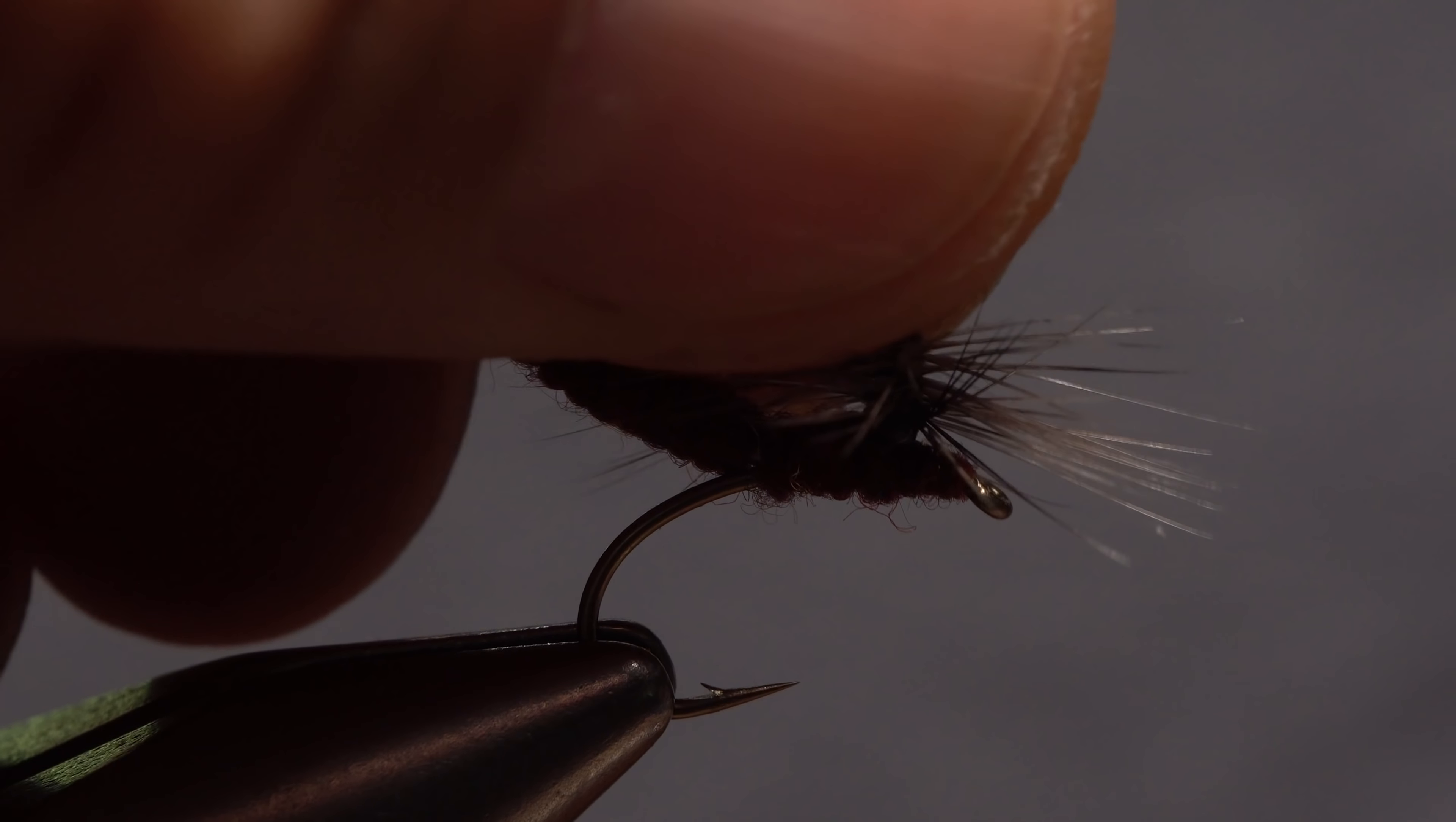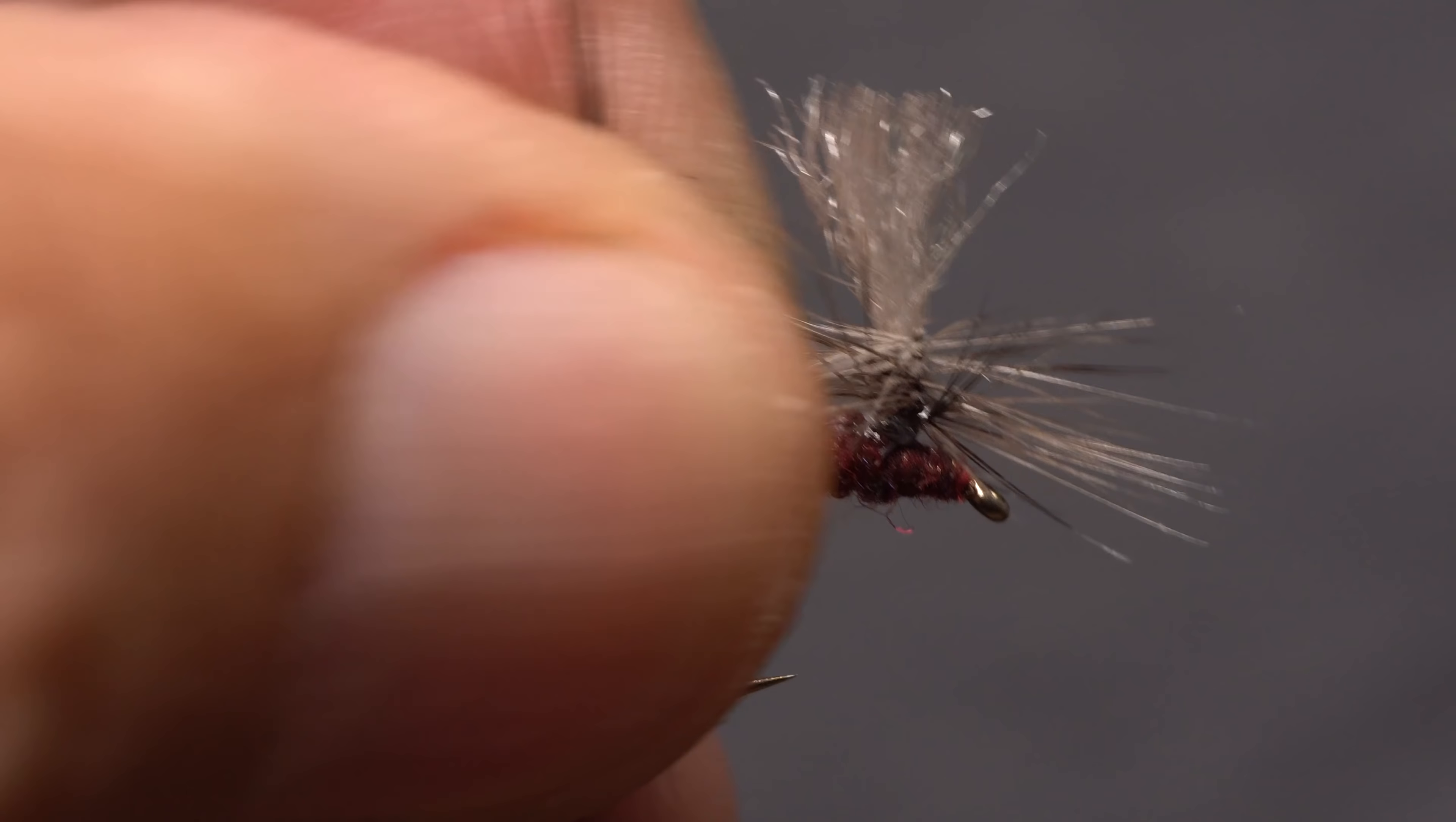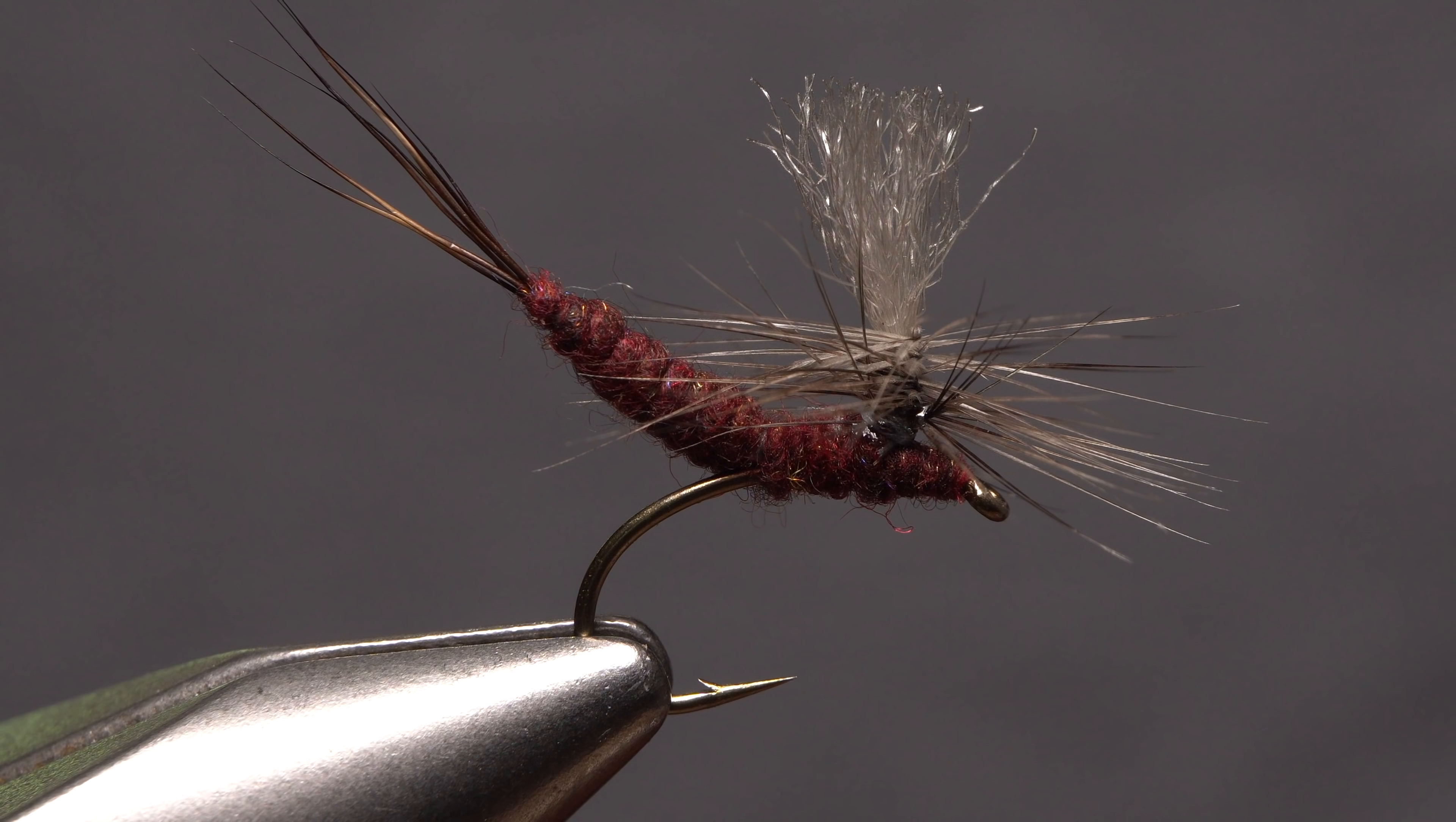And that's the extended body Isonychia parachute. As good as this fly looks in the vise, it fishes even better.